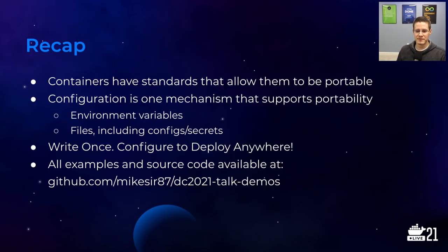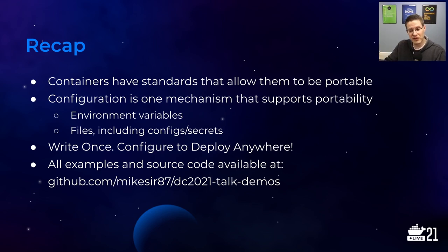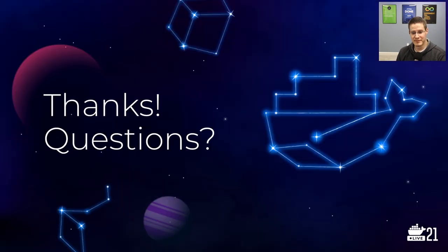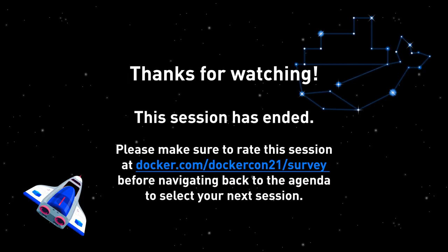To recap: containers have standards just like intermodal containers that allow us to configure how we connect to them, make them portable, and reconfigure them. Configuration is one of these mechanisms — we can use environment variables and files. Leverage the files, the orchestration system you're deploying in, as well as whatever you're developing in. Use what makes the most sense. Write once, configure to deploy anywhere. All my source code is available on GitHub. I'm pretty much everywhere on the internet at MikeSir87 — feel free to reach out. Thanks, and enjoy the rest of DockerCon!